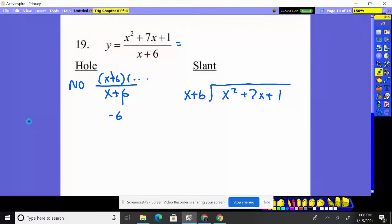So we just do the division here. X and X squared, X. X times X is X squared. X times a six, six X. Subtract the whole thing. Seven X minus six X gives me an X. Bring down the plus one and now start the problem all over again.